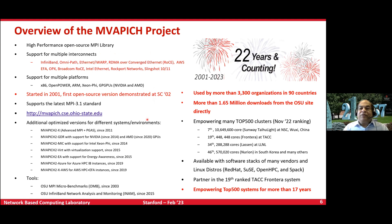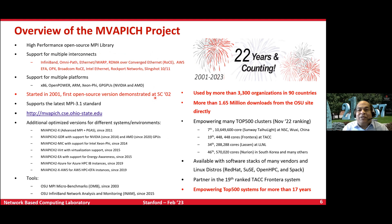If you're not familiar with the MVAPICH project, we started it almost from day one of InfiniBand. InfiniBand was introduced in October 2000, and we were the very first group in the world to come up with an MPI library to take advantage of it. At that time it was SDR — Single Data Rate — and now we are talking about NDR at 400 gigabits per second.